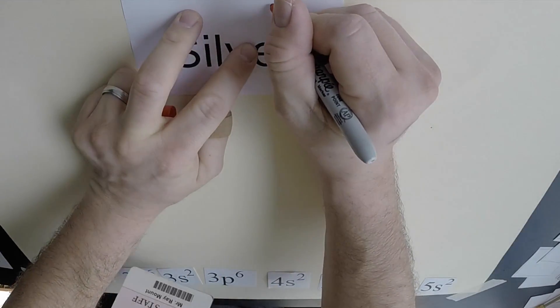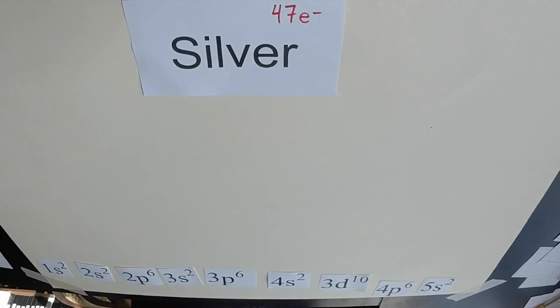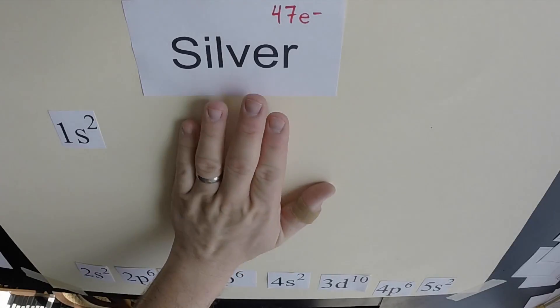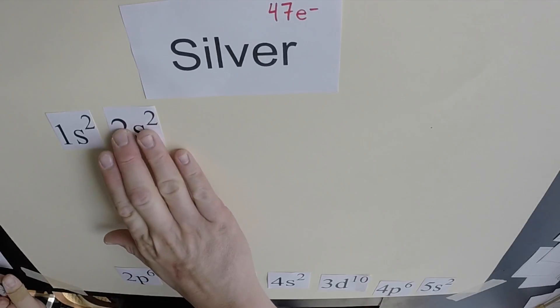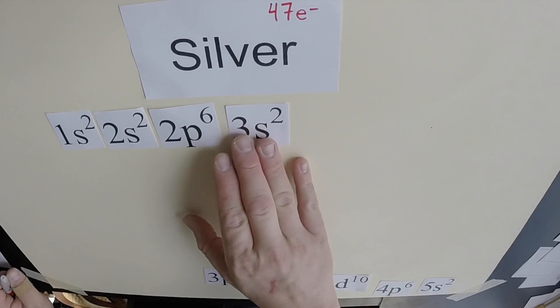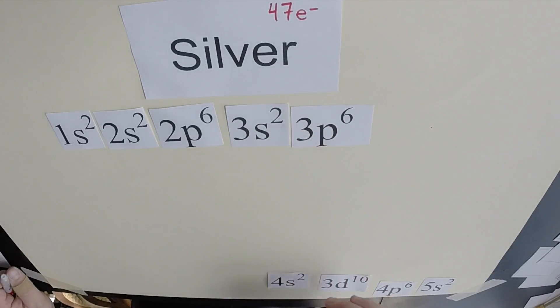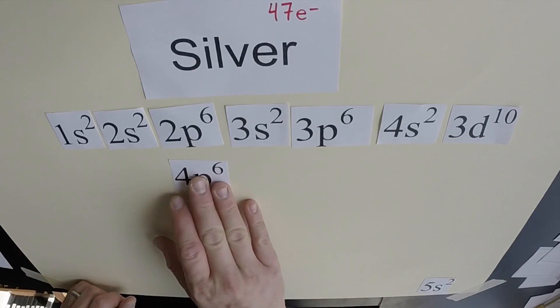So a neutral atom of silver has 47 electrons. Our Aufbau principle, then, we're going to start with 1s and build our way up. So silver's electron configuration: 1s2, 2s2, 2p6, 3s2, 3p6, 4s2, 3d10, 4p6...